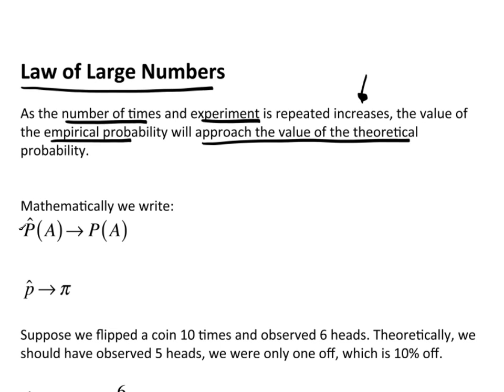Now, mathematically we write: there's a hat, that means the empirical probability. This arrow means - it has a couple different meanings. You can say it converges to, or you could say it goes to. There are several ways you can verbalize what this means, but the idea is that this value becomes the theoretical.